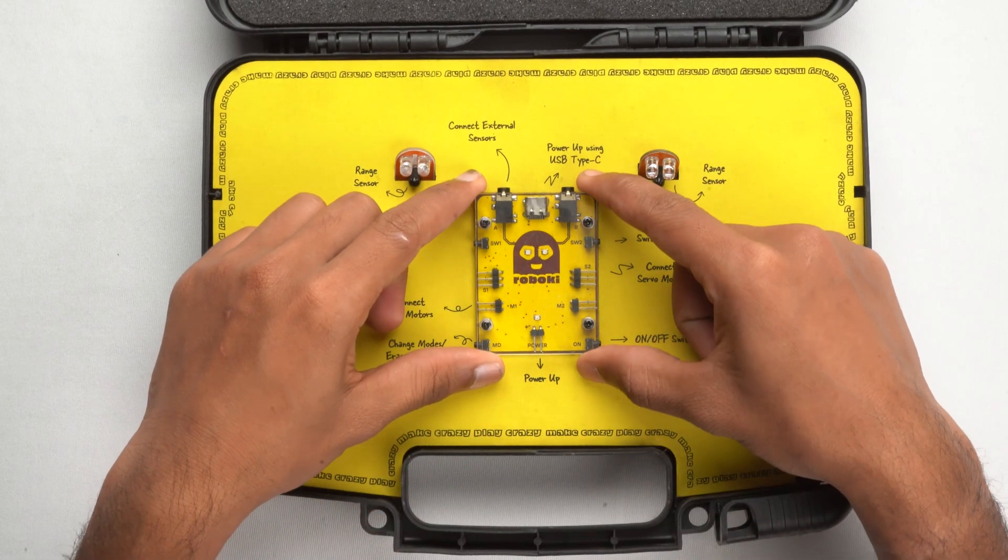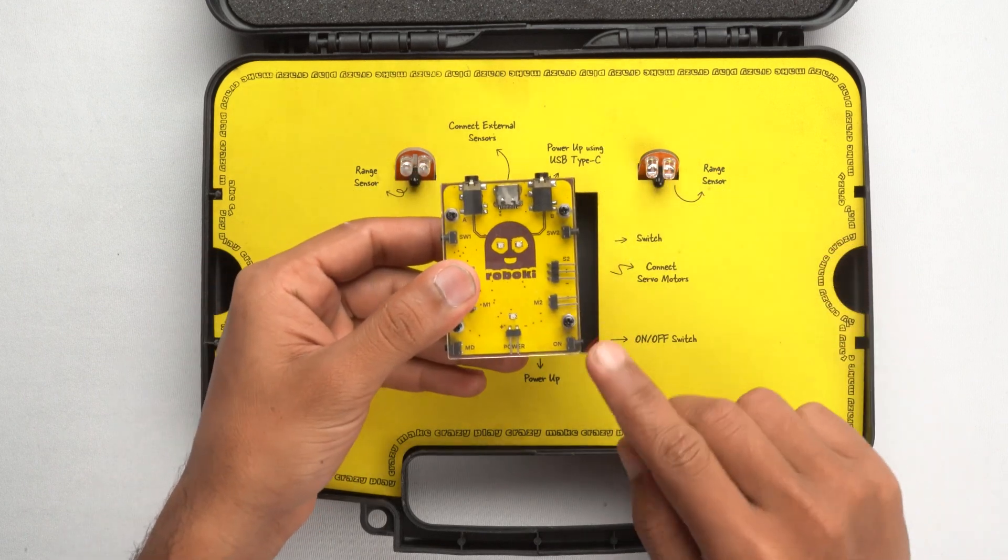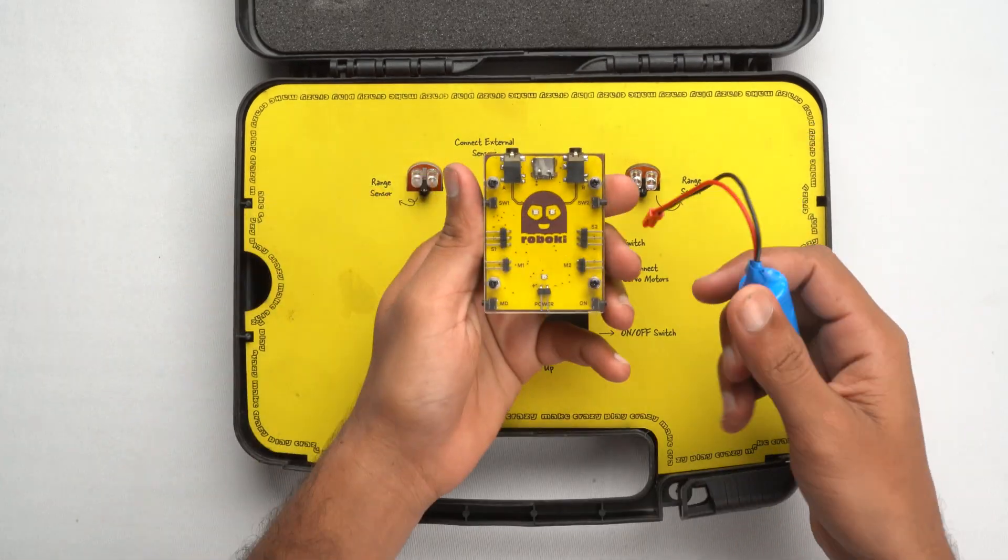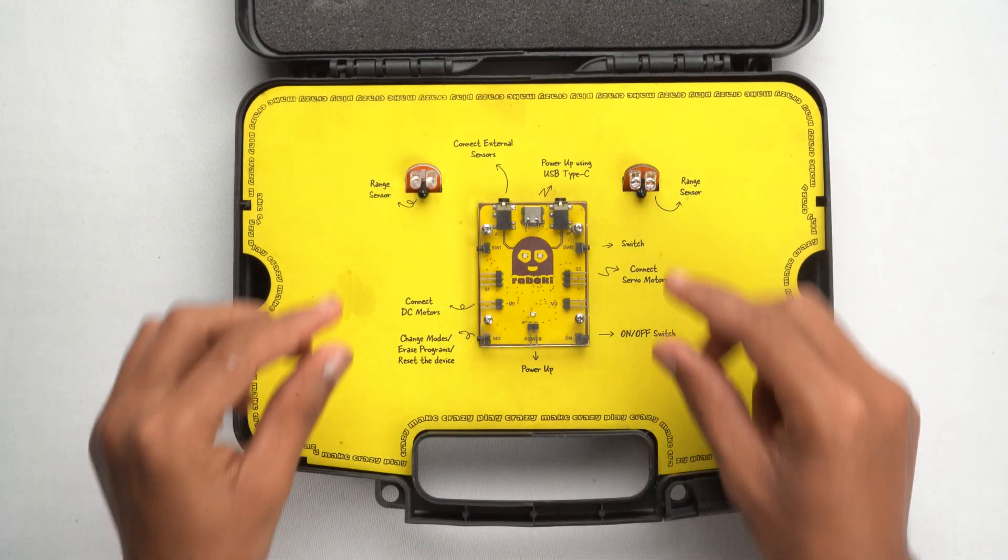There is one more type of RoboKey that doesn't have an inbuilt battery. Hence, we use an external battery which will be connected to this power pin to power up the RoboKey. Now, let's check out the two sensors in the kit.